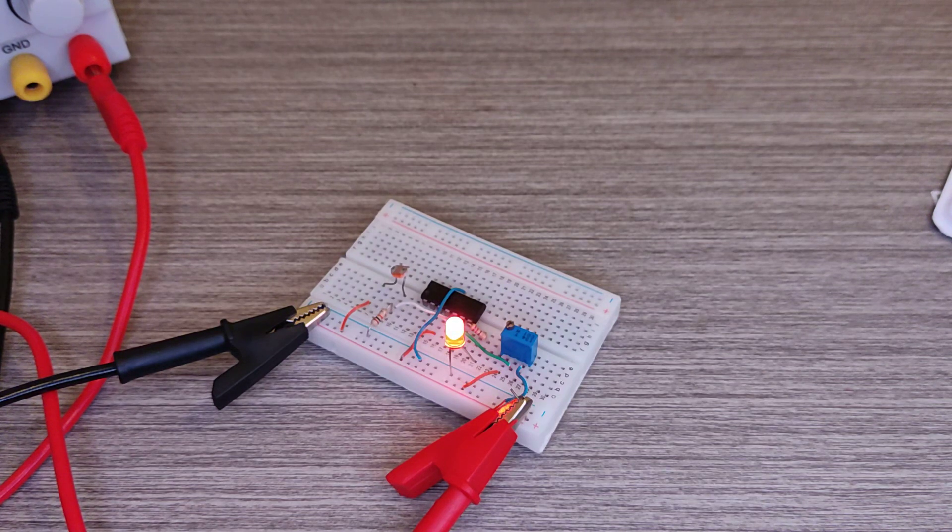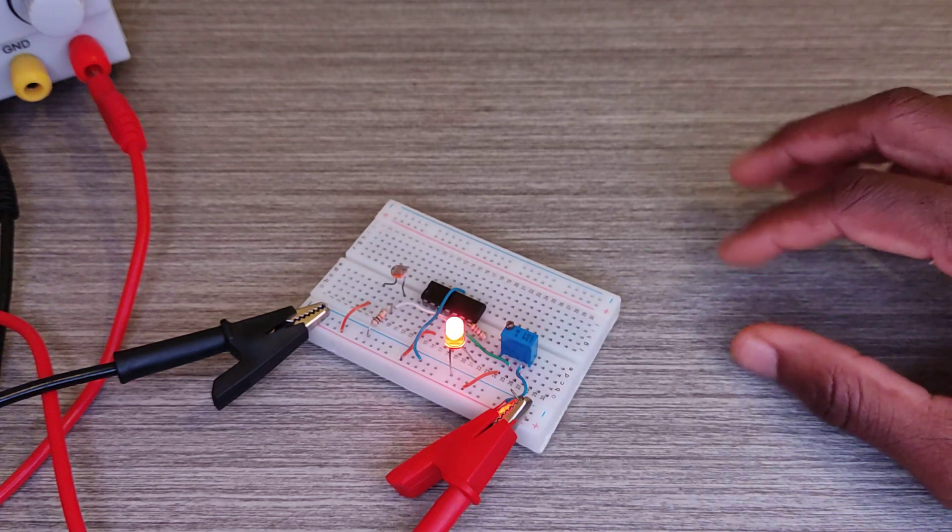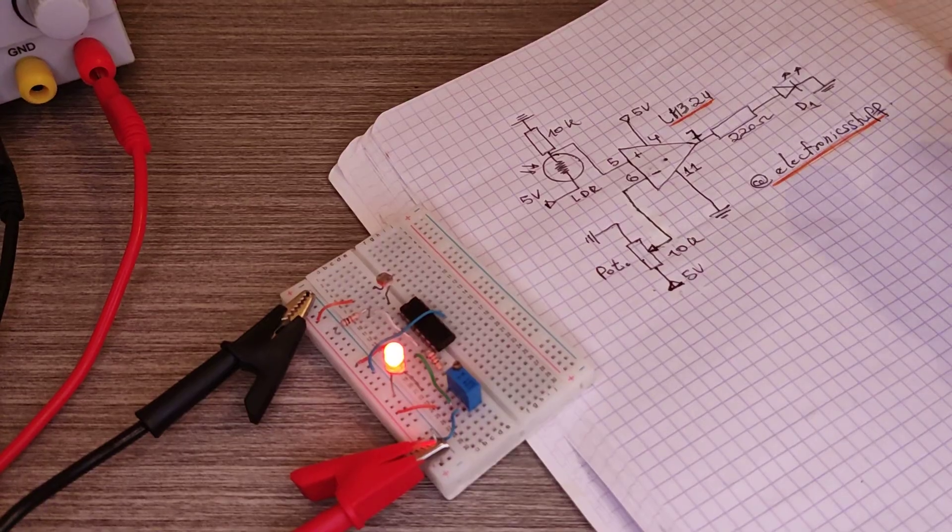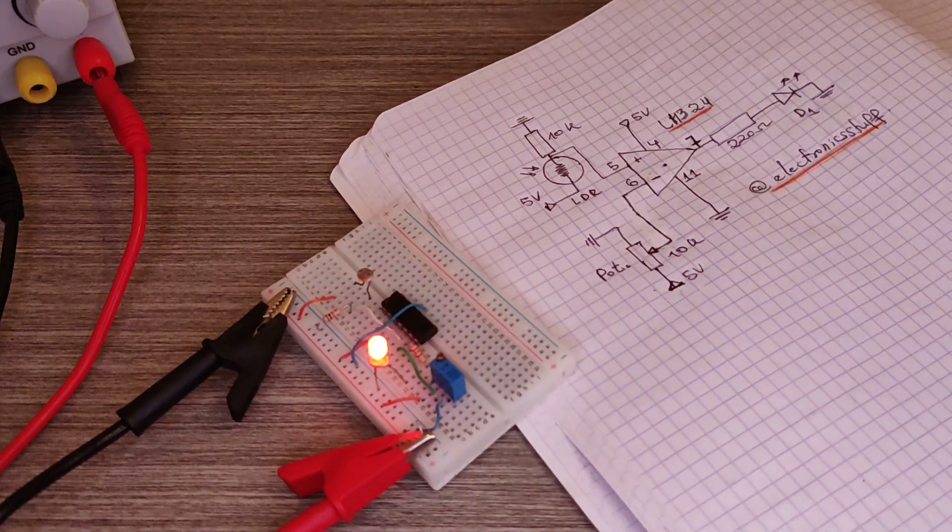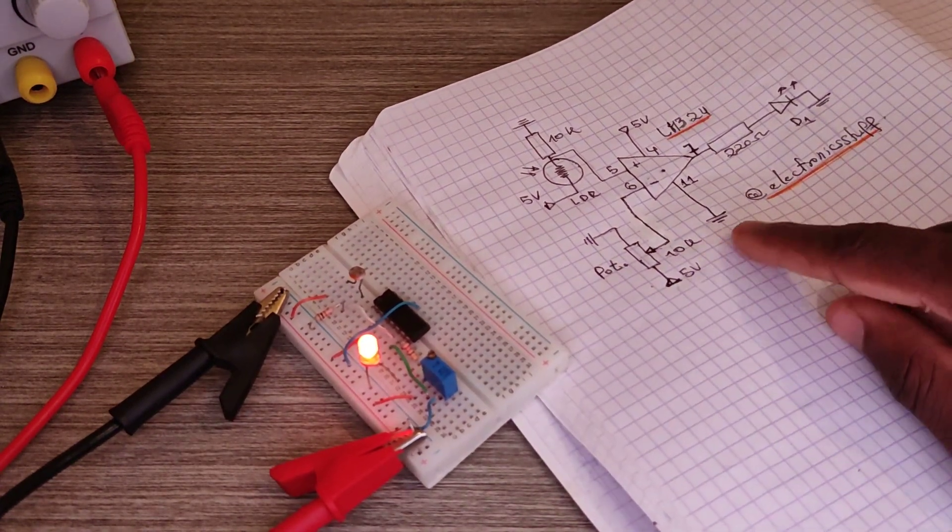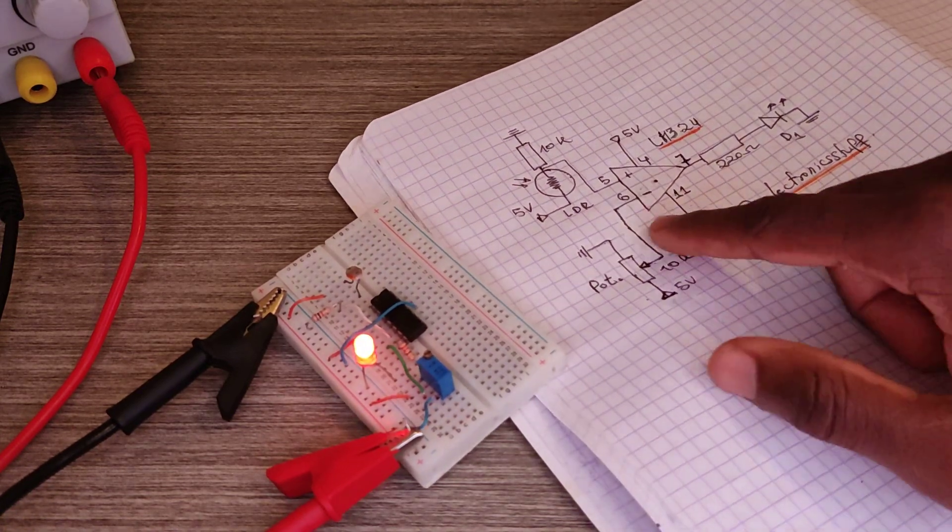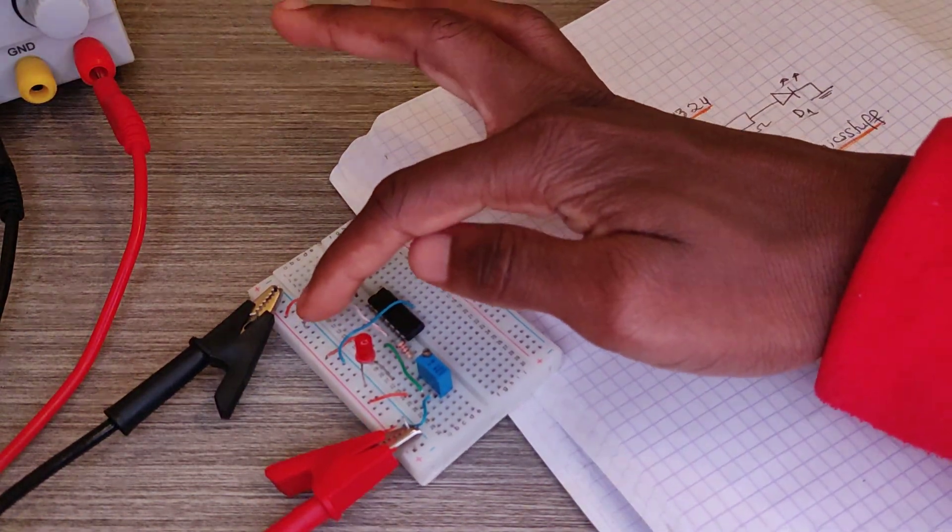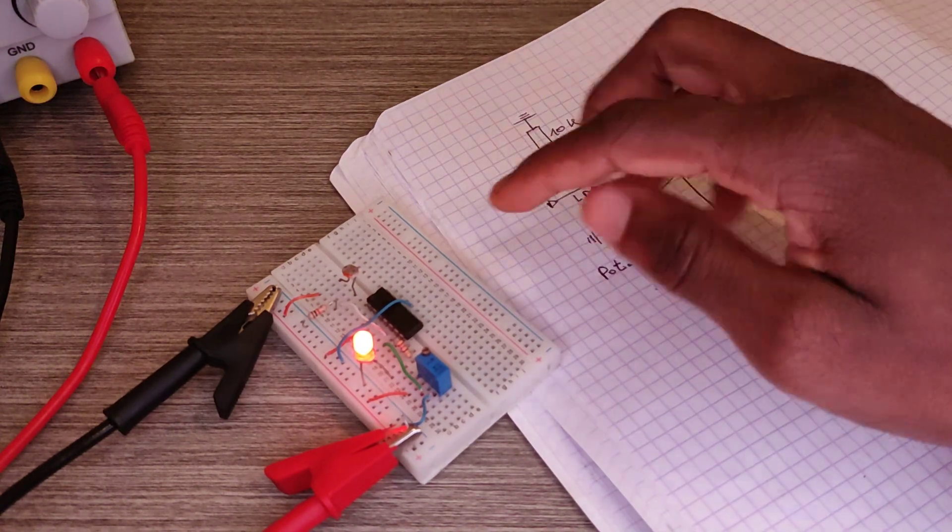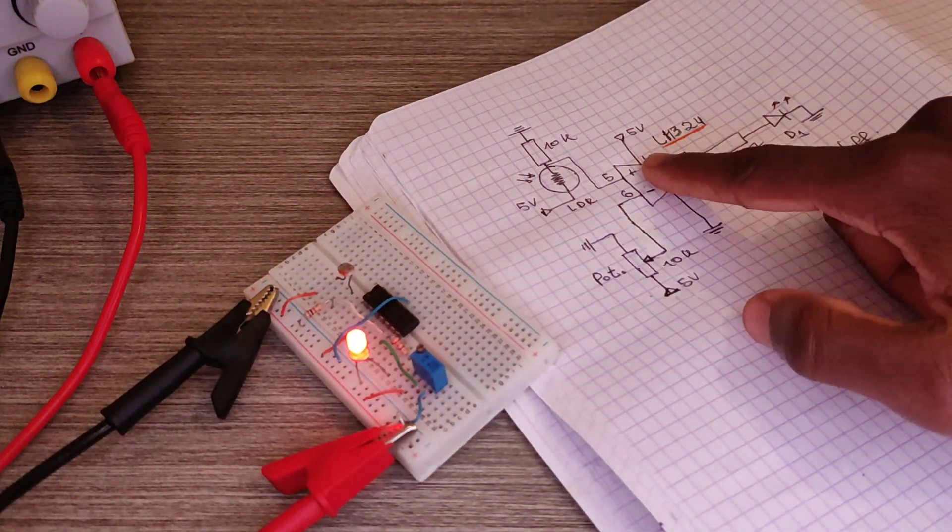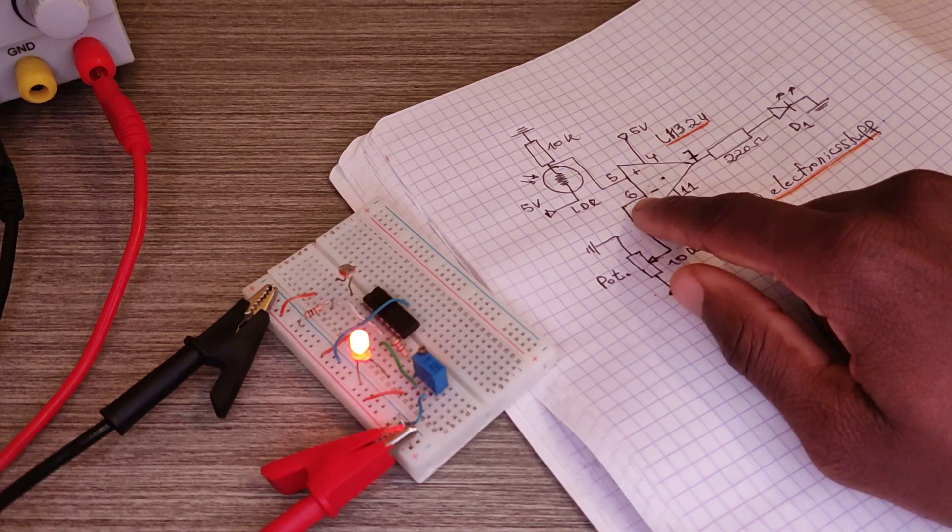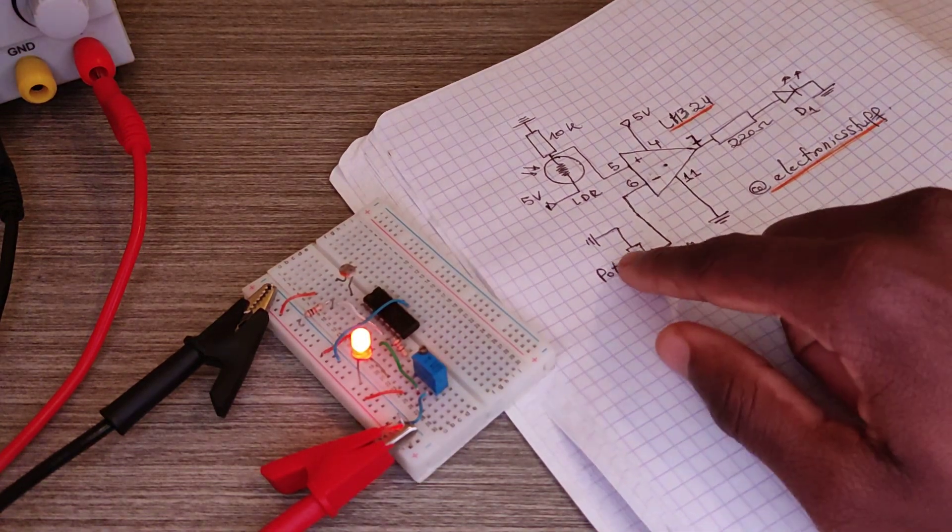Now let me show you the schematic. That's the schematic. Here's the LDR, the 10 kilohm resistor here. Five volts is here. The LM324, pin five plus, pin six minus, the pot.